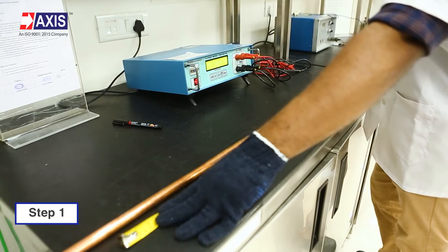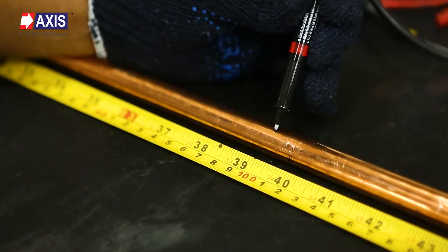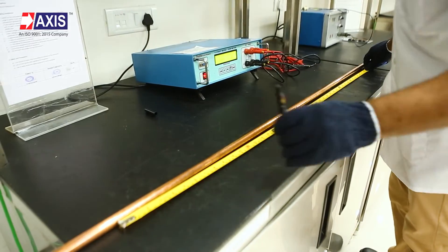First, measure the length of the test sample and mark the required length for which resistance is to be measured.